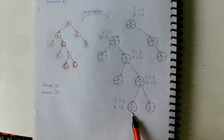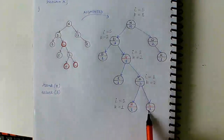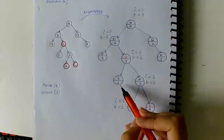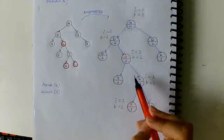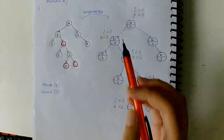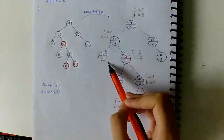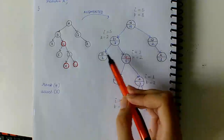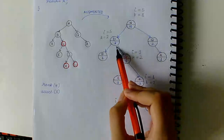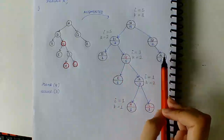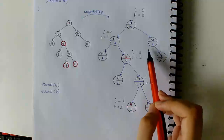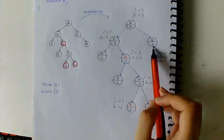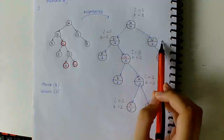Computing the sizes: h has size 1, l has size 1, i becomes 1 + 1 + 1 = 3. e becomes 0 + 0 + 1 = 1. g becomes 1 + 3 + 1 = 5. b becomes 0 + 0 + 1 = 1. d becomes 1 + 5 + 1 = 7. r becomes 0 + 0 + 1 = 1. q becomes 0 + 1 + 1 = 2, and n becomes 7 + 2 + 1 = 9.